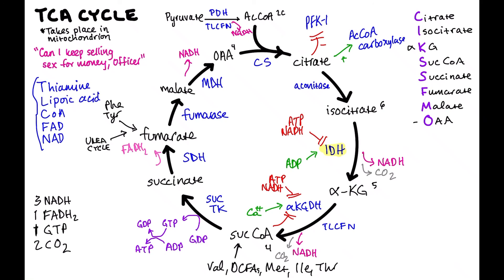Finally, if you have a blockage of any of these steps — primarily at pyruvate dehydrogenase, due to arsenic poisoning or an inborn defect — you'll have a buildup of pyruvate. Pyruvate can become lactic acid. So if you have a disorder of the TCA cycle and can't undergo aerobic metabolism, the consequence is lactic acidosis.